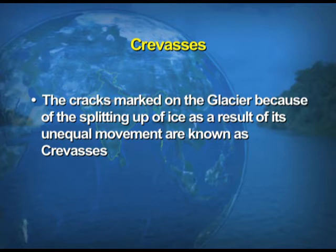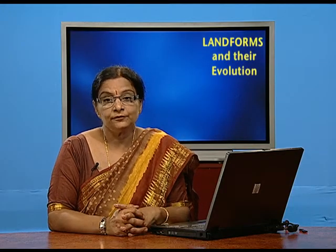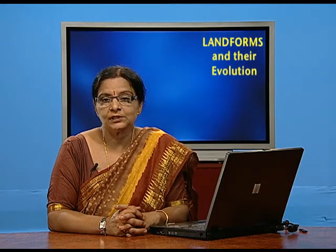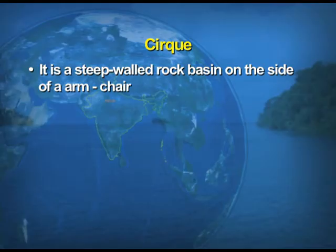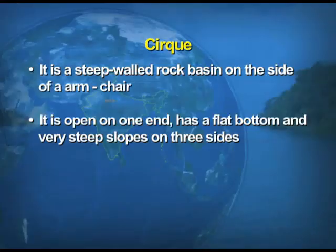The next feature is cirque. A cirque is a steep-walled rock basin on the side of a mountain, resembling an armchair — open on one end with a flat bottom and very steep slopes on three sides, similar to an easy chair with a depression in the center and steep sides.